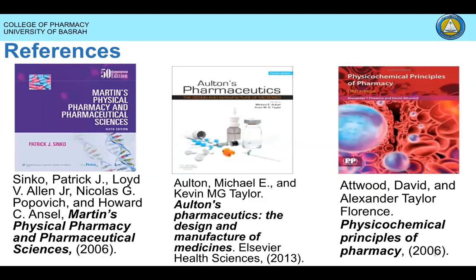The reference that we are going to use is the first book, which is Martin's Physical Pharmacy. Martin is American, so the language is not too difficult for us. There is also Aulton's Pharmaceutics and Physico-Chemical Principles of Pharmacy. This book is British, and it may be a bit more difficult to read, but you may also refer to it if you are interested.